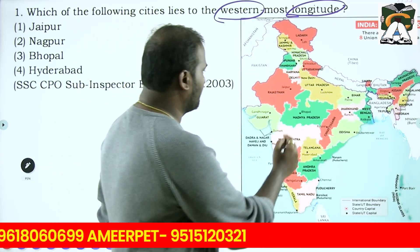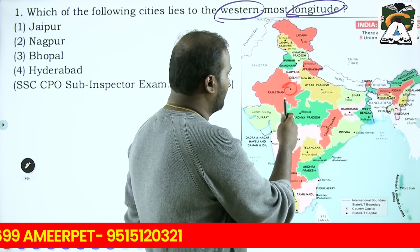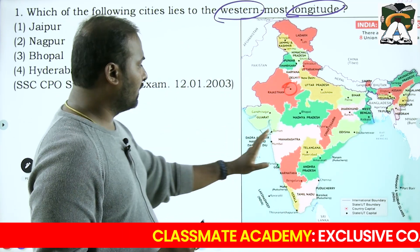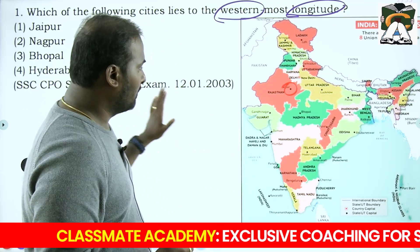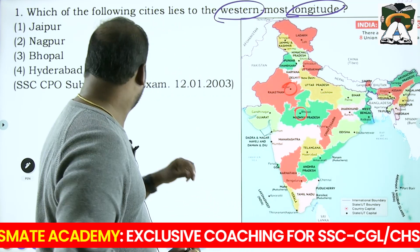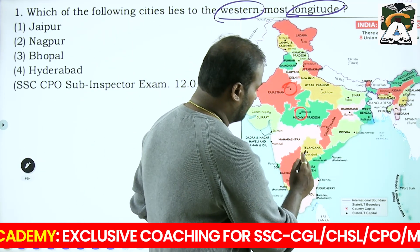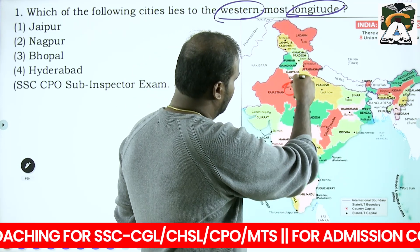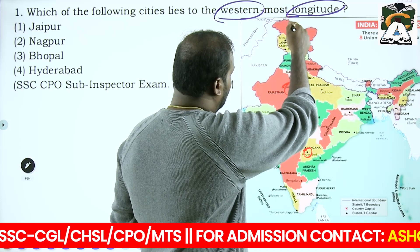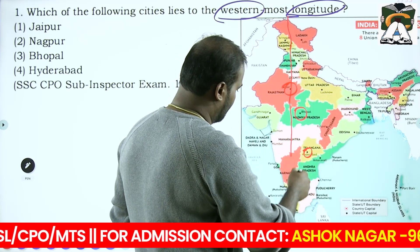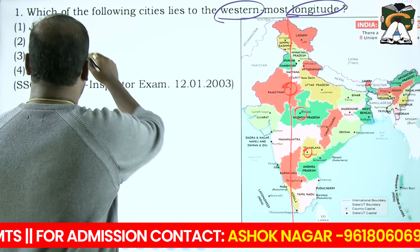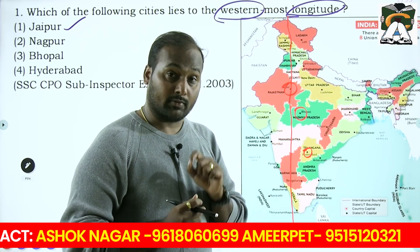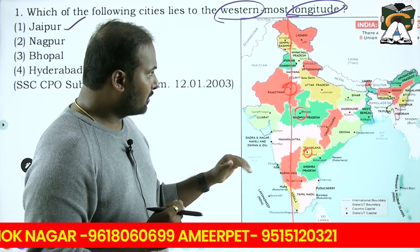Looking at the map, you can see Jaipur here, then Nagpur which is present in Maharashtra, then Bhopal which is almost at the center, then Hyderabad. By seeing that the westernmost longitude is Jaipur, your answer is Option 1 - Jaipur. You can see the longitude passing through Jaipur. So Jaipur is the answer.